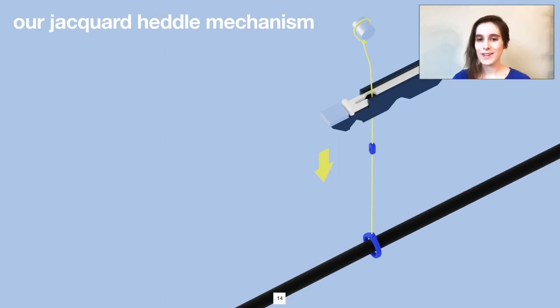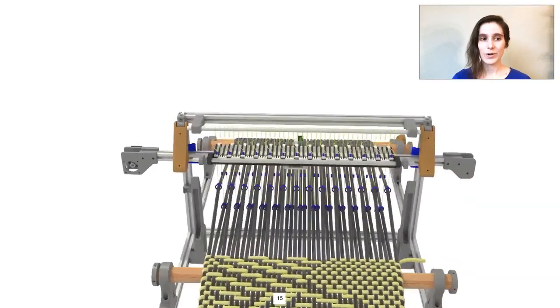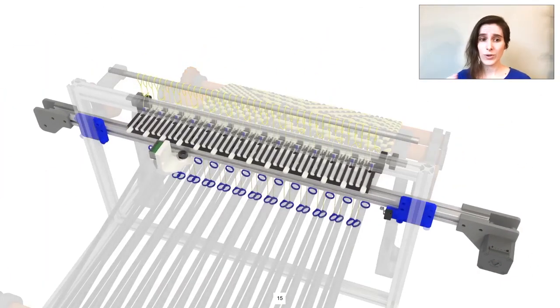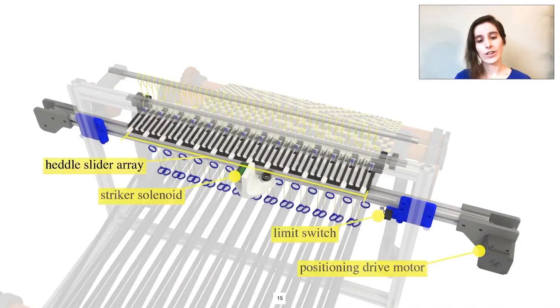Because this mechanism is bistable, the selection can therefore be done in serial. In this case, we use a belt drive to position just one solenoid to strike each chosen slider.